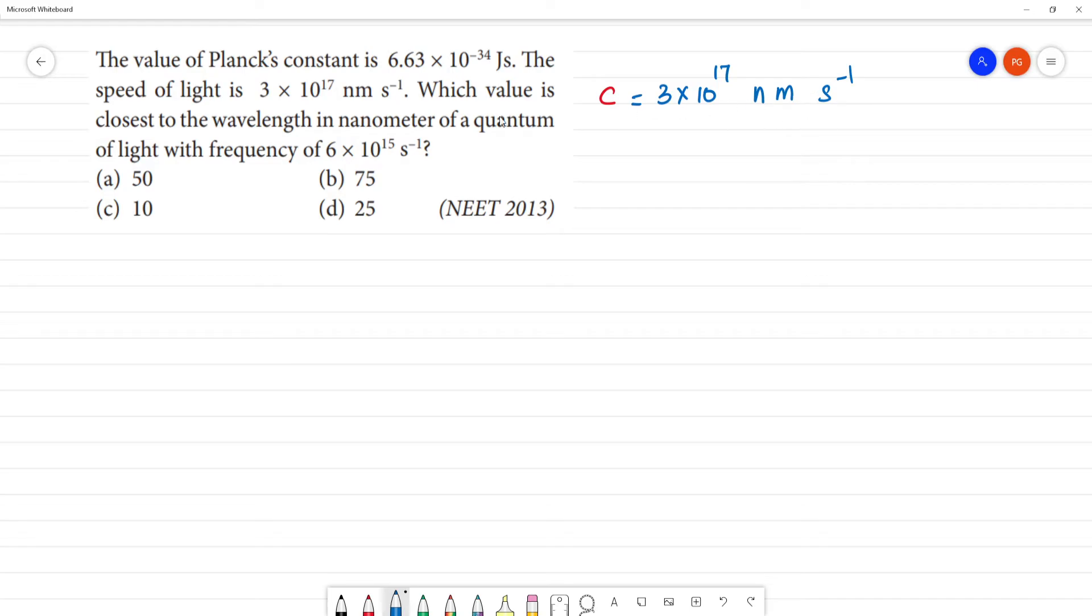Which value is closest to the wavelength in nanometer of quantum of light frequency 6 into 10 to the power 15 second inverse? So we can say wavelength in nanometer. Clear? Now we can relate the formula.